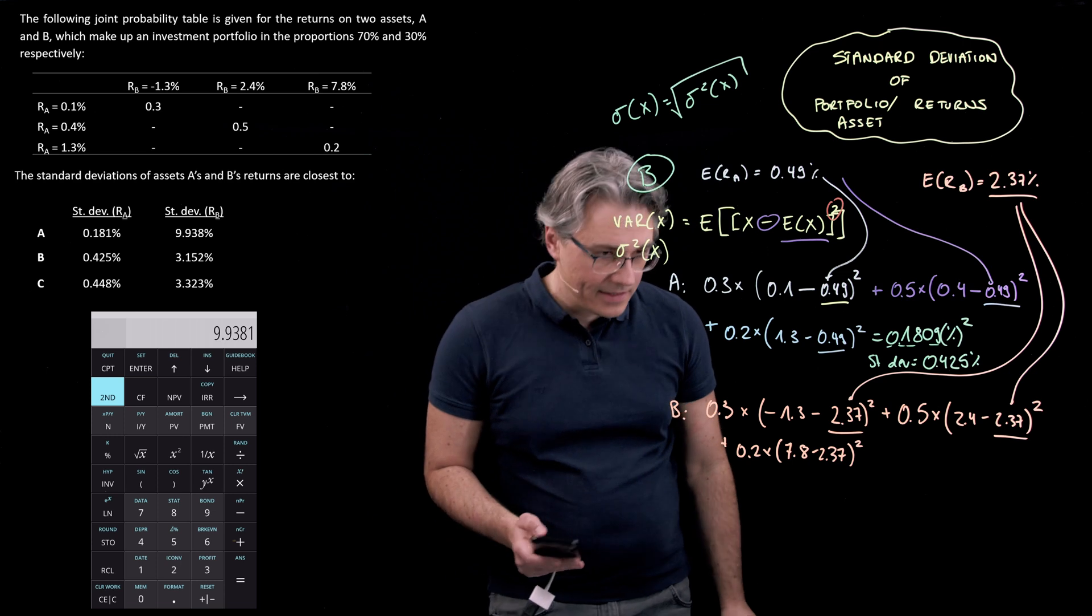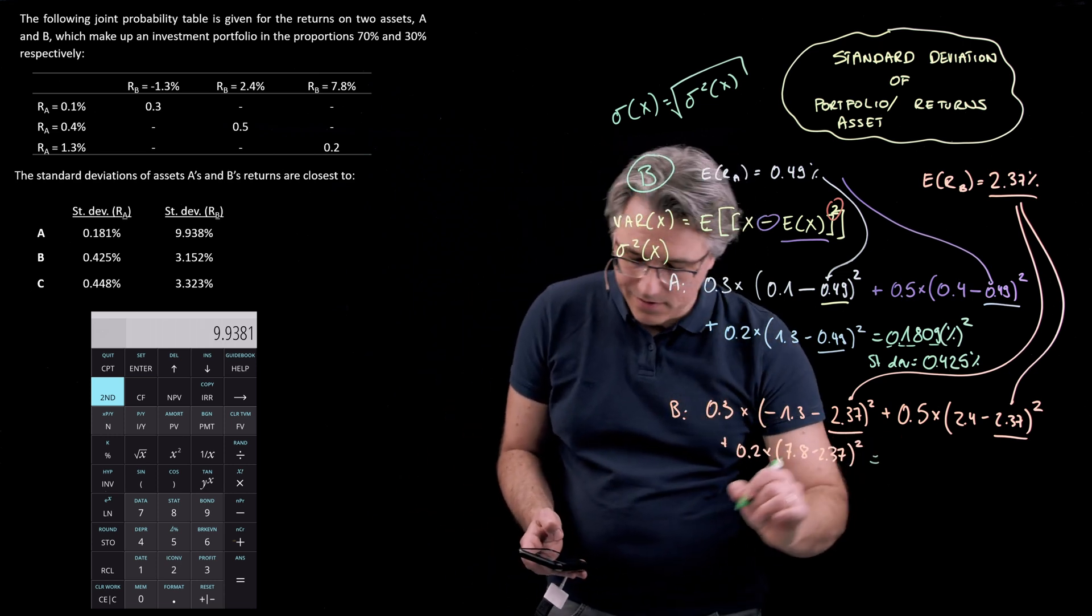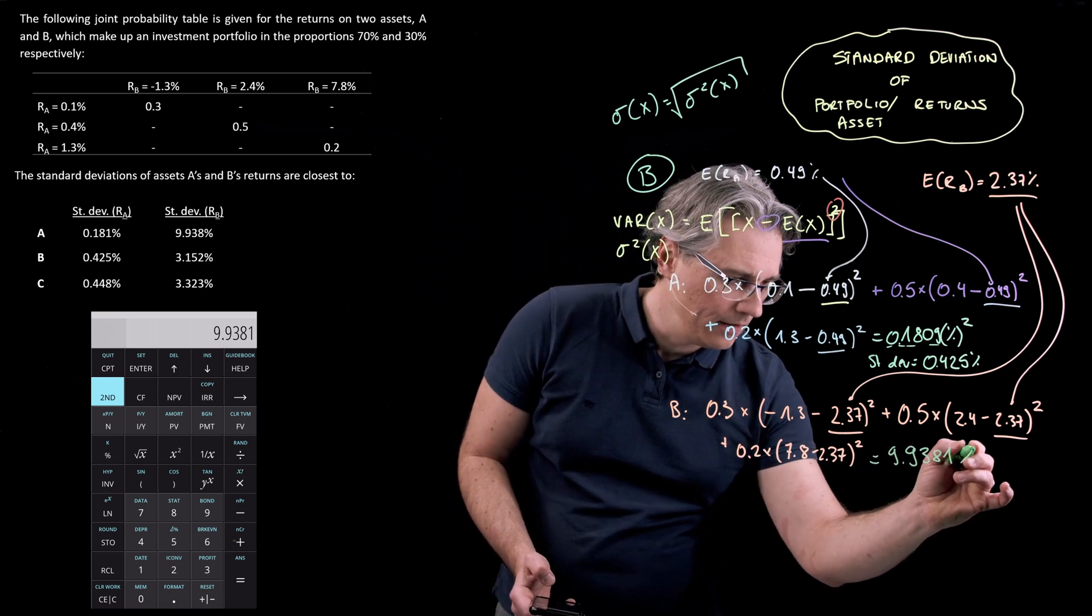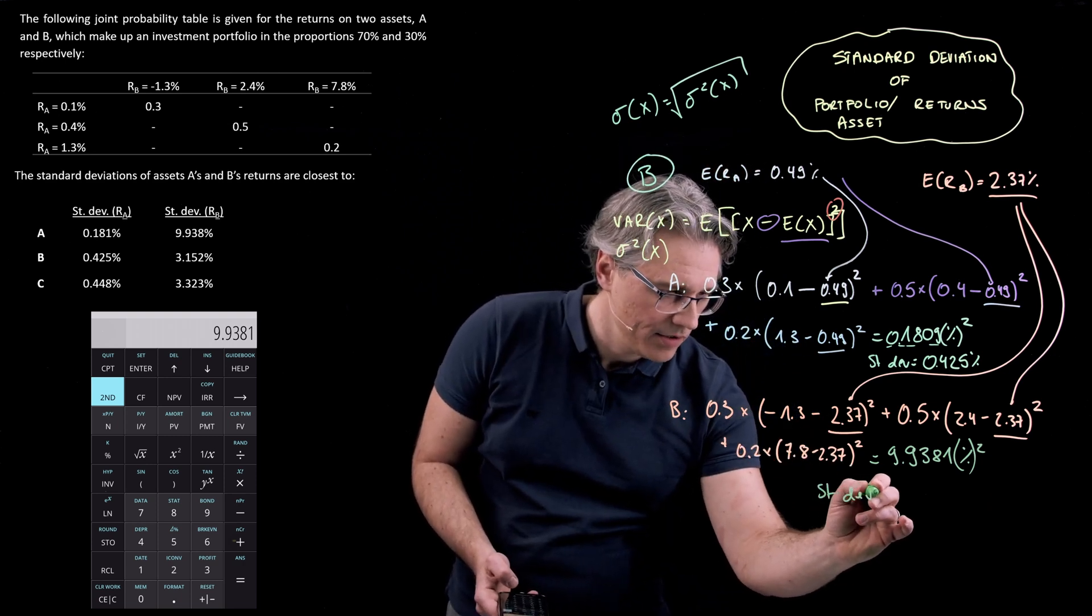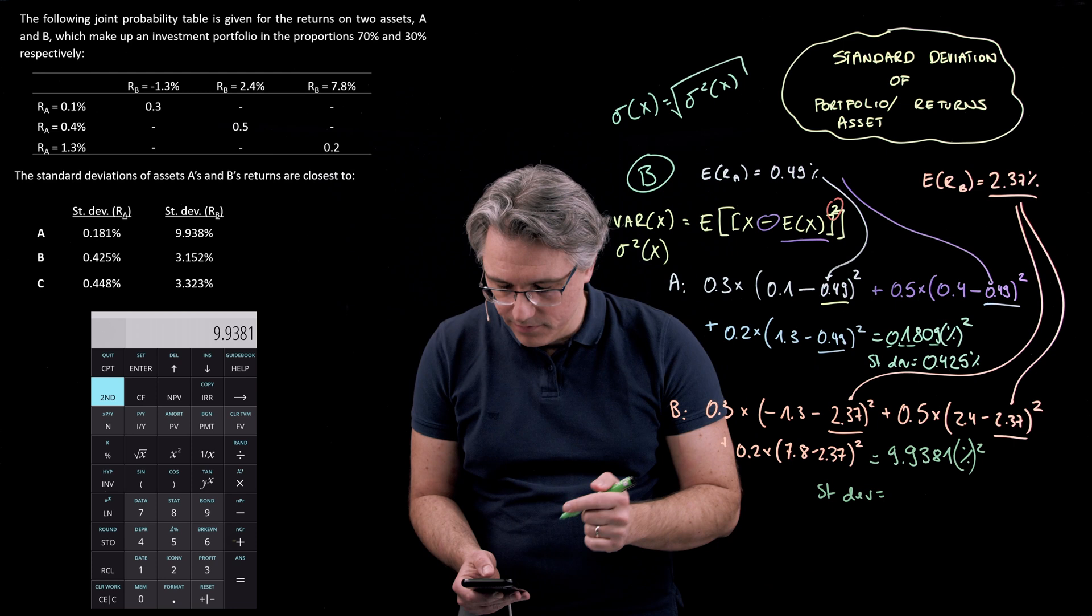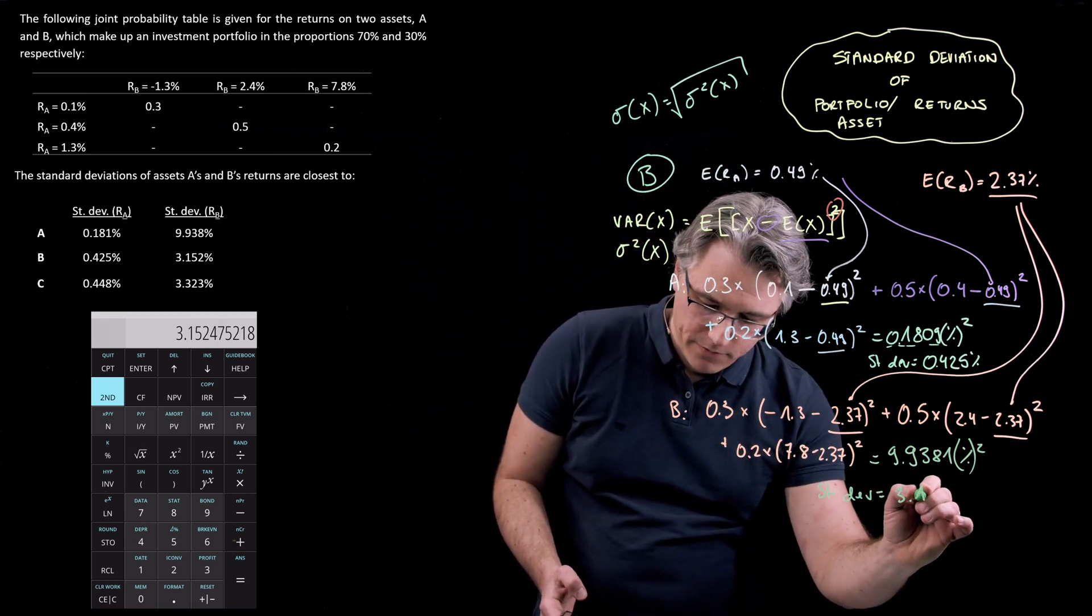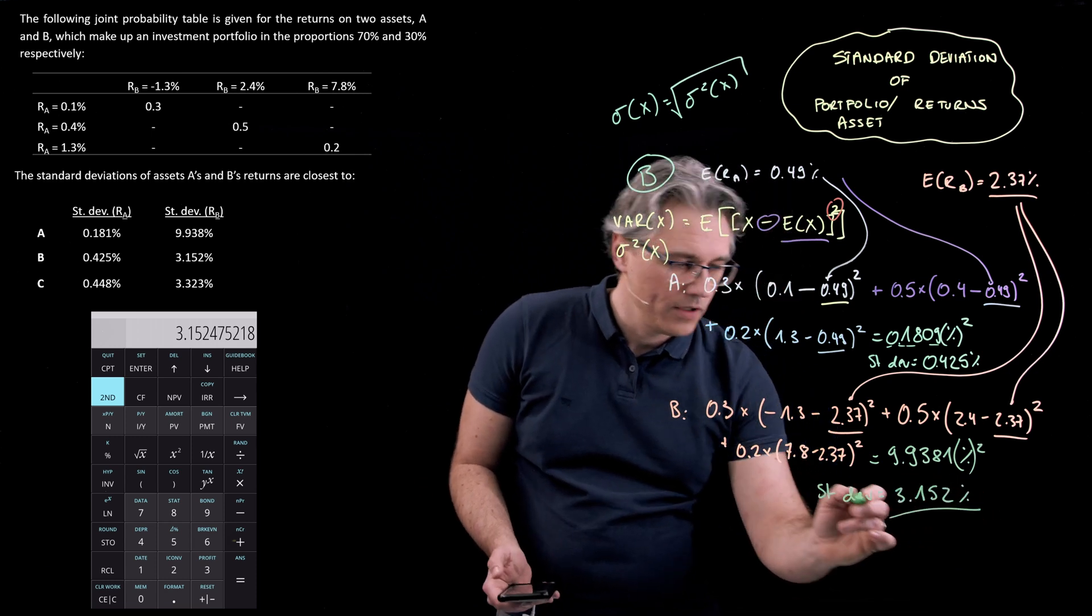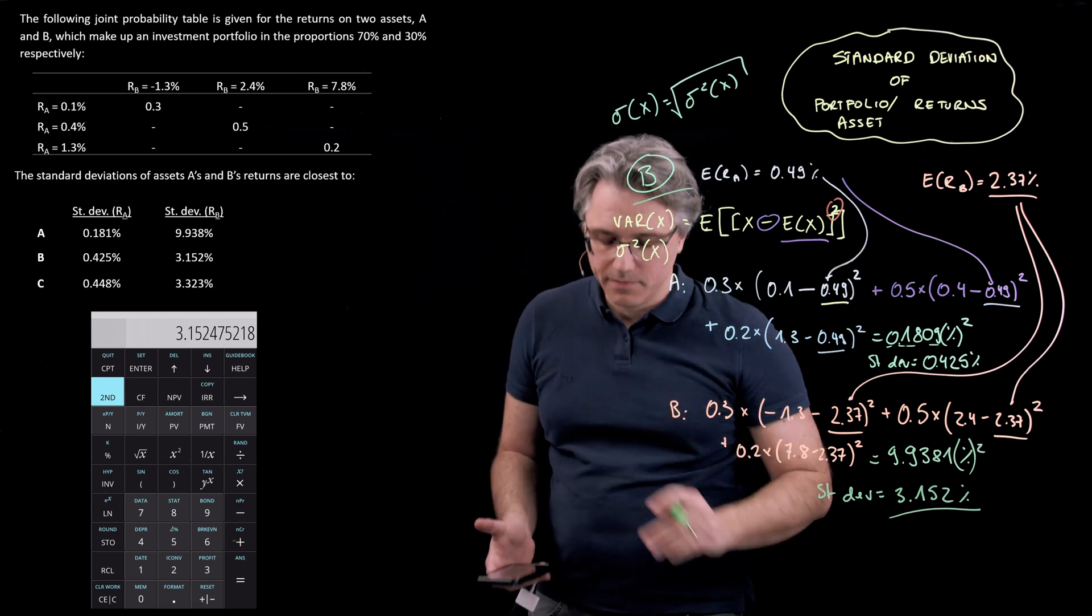Now, once again, this is the variance that we've just computed here. So it's 9.9381 and this is in percent squared. And in order to turn it into a standard deviation result, we need to just hit the square root button and that gives 3.152 percent, which is once again absolutely in line with the answer we've already marked, answer B.